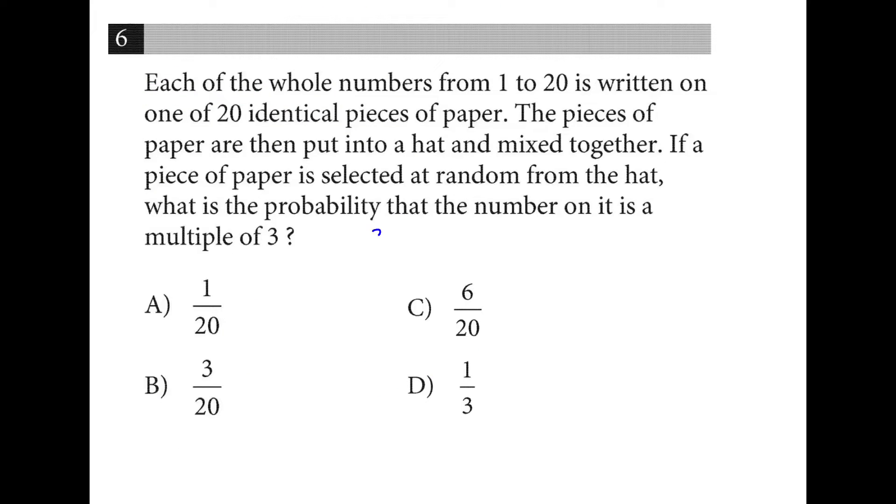Out of the numbers 1 through 20, you have 3, 6, 9, 12, 15, and 18. So that's 6 multiples of 3 out of the total 20 numbers. Your answer is C.